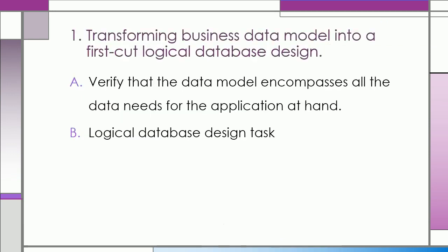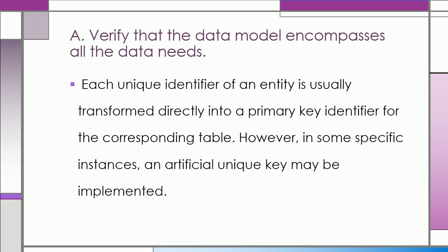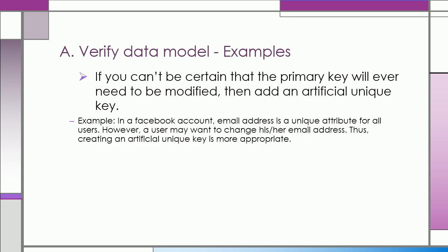For the first step of the Logical Database Design, first part would be to verify that the data model encompasses all the data needs for the application at hand. The next part would be the Logical Database Design. For the first part, each unique identifier of an entity is usually transformed directly into a primary key identifier for the corresponding table. However, in some specific instances, an artificial unique key may be implemented. If you can't be certain that a primary key will ever need to be modified, then add an artificial unique key.